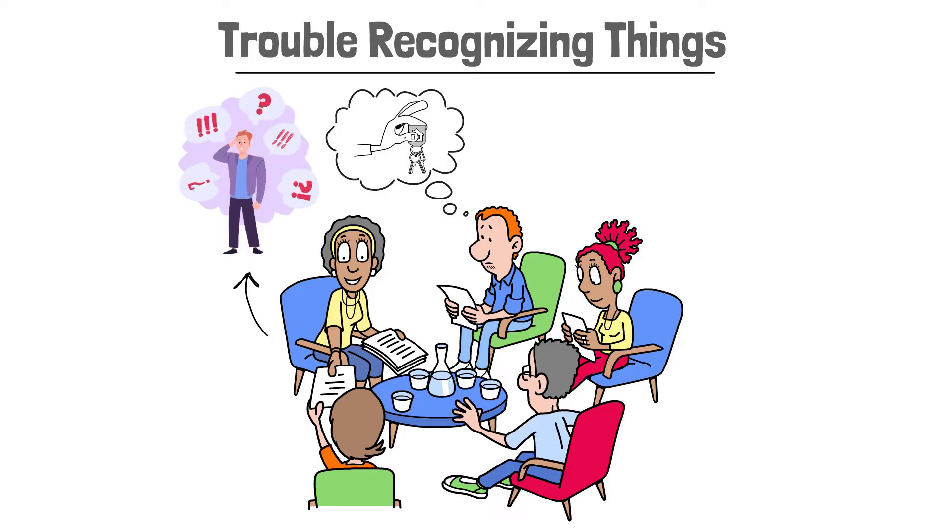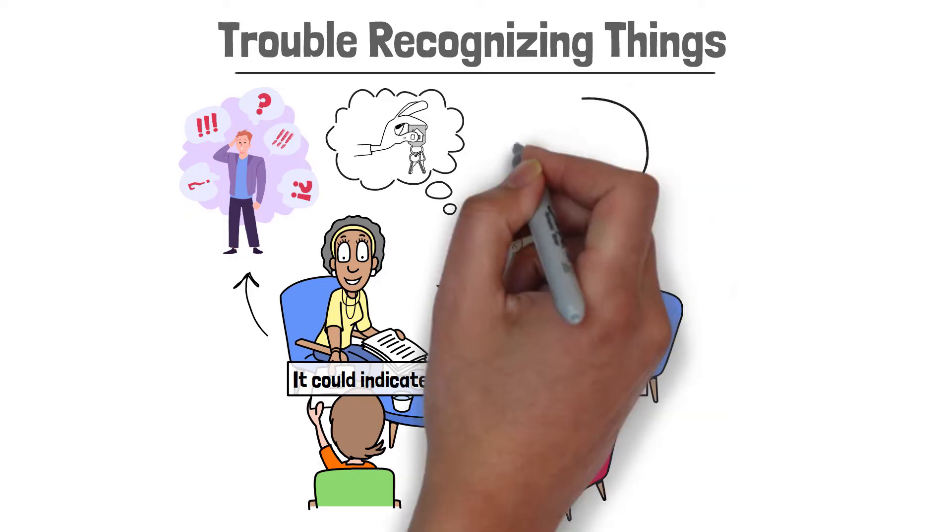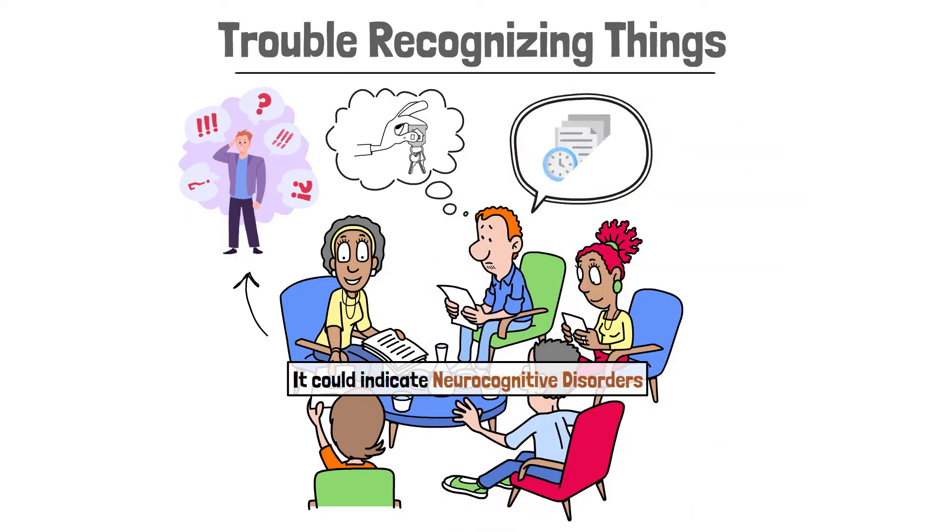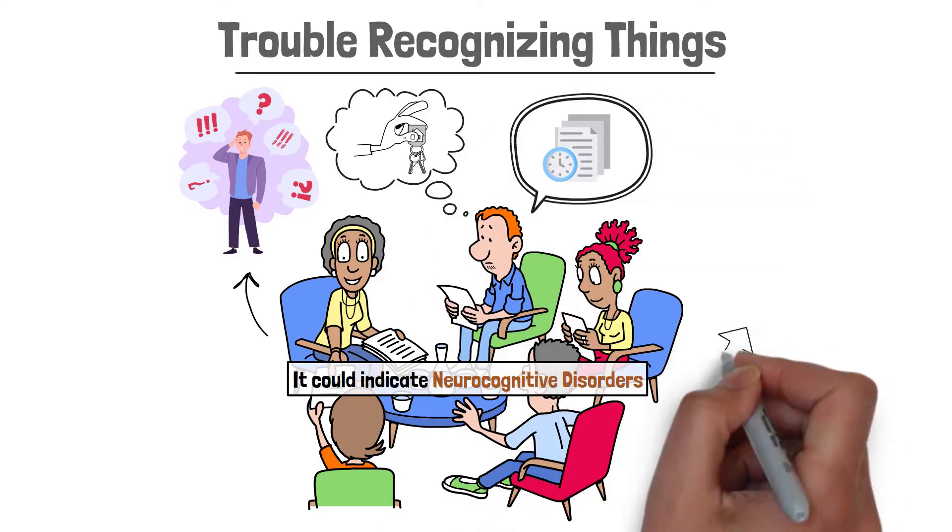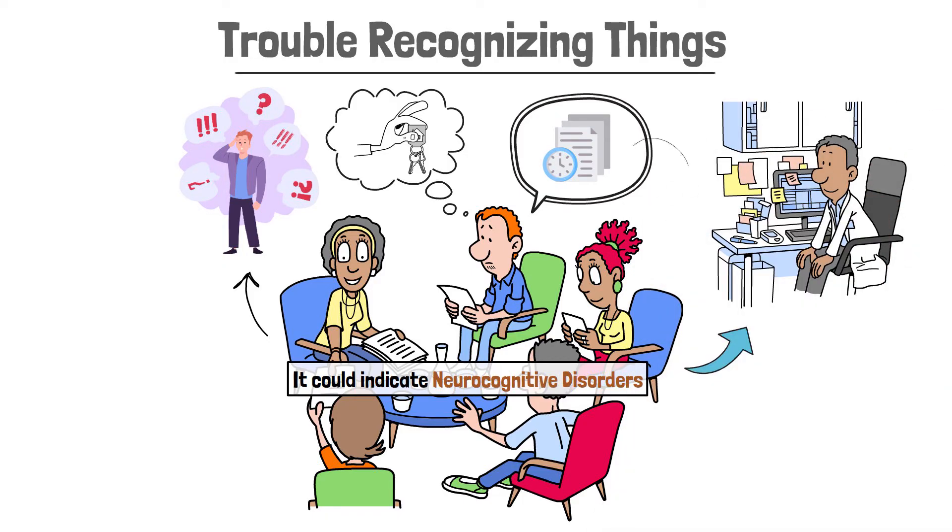If you or someone close to you repeatedly shows these symptoms, it could indicate neurocognitive disorders. These symptoms can sometimes be temporary and then disappear, but if they persist repeatedly or continuously, it's a signal that consulting a doctor is necessary. Now let's move to the next points.